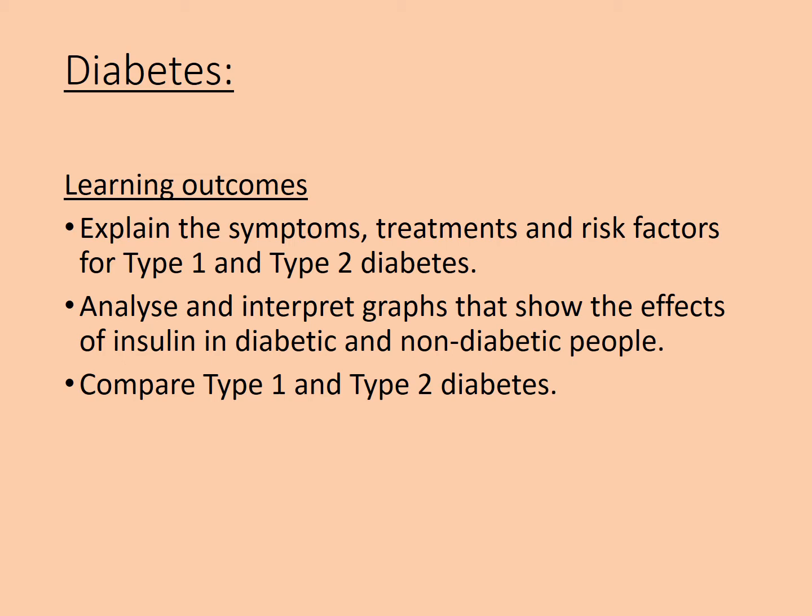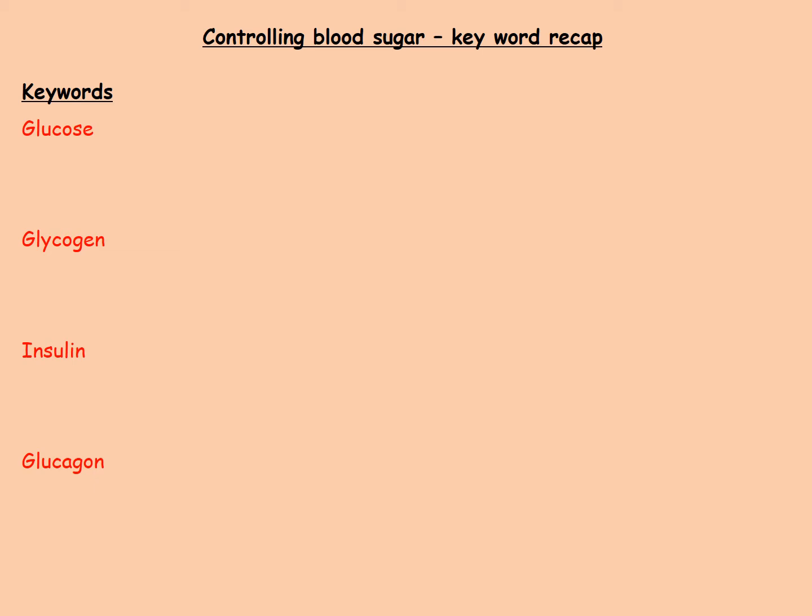We have a starter activity to begin with. There are four keywords associated with our lesson from yesterday on controlling blood sugar: glucose, glycogen, insulin, and glucagon. Remember the importance of the spellings of glycogen and glucagon and not confusing them.